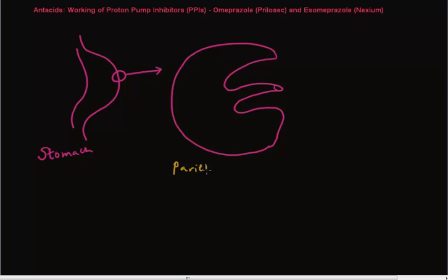Parietal cells are the ones that are responsible for production of acid. That's where the acid is produced. So this is a magnified parietal cell, a single parietal cell, looks like an E shape, the letter E.